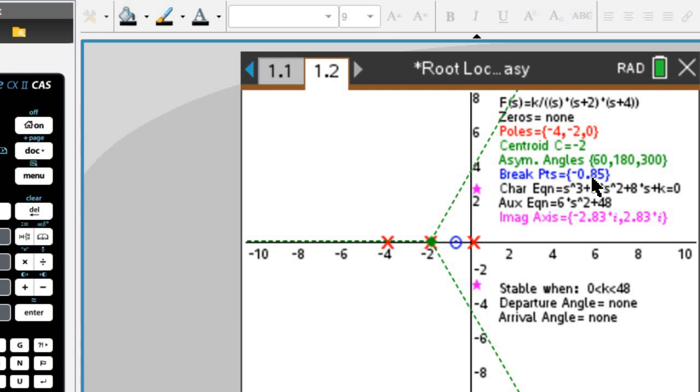And our break point is at negative 0.85 here in blue. We also have the stability criterion here again, and we have no departure and arrival angles at this particular example.